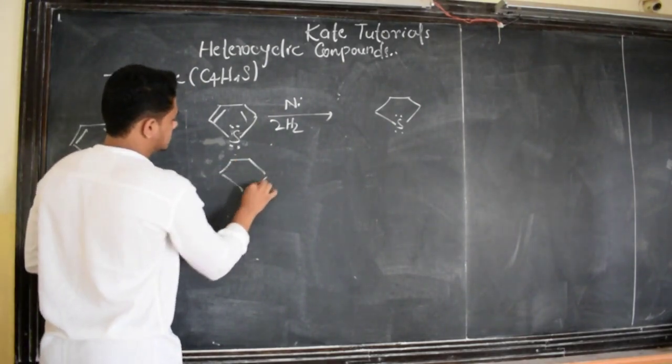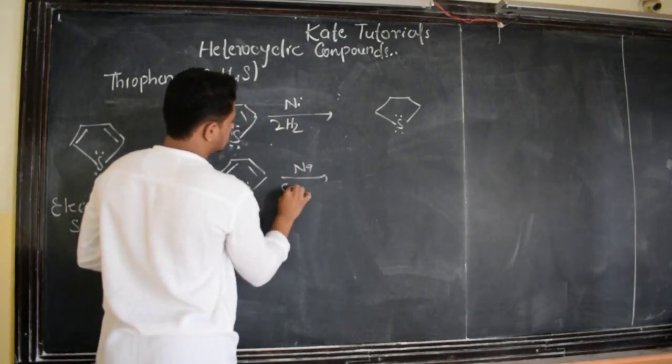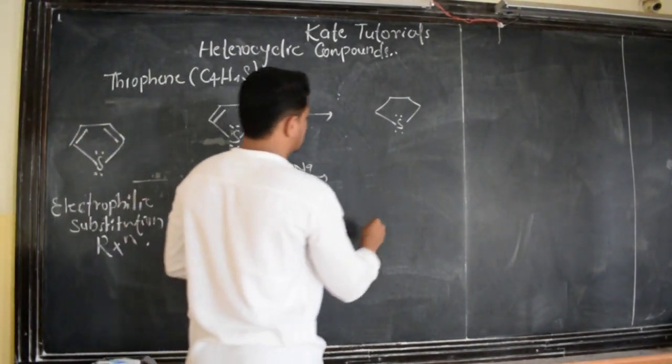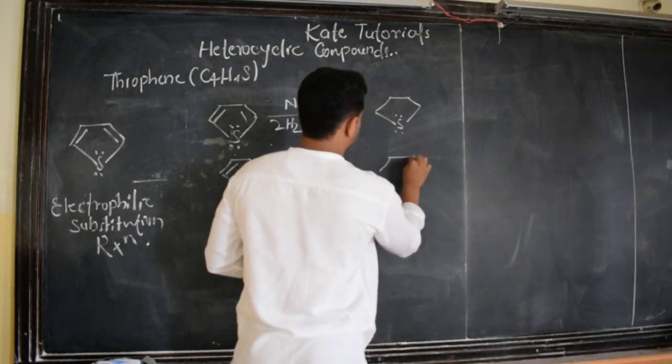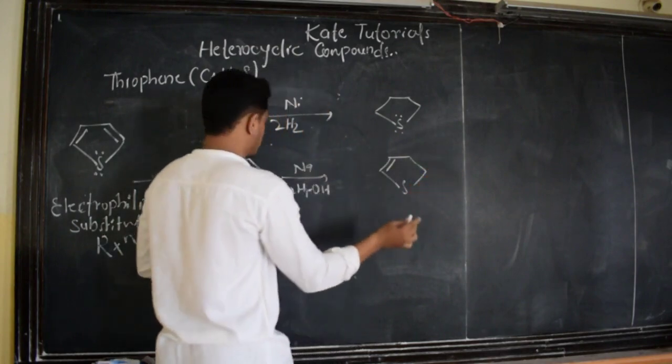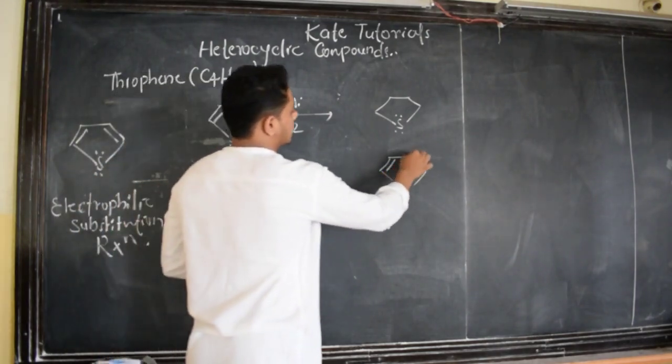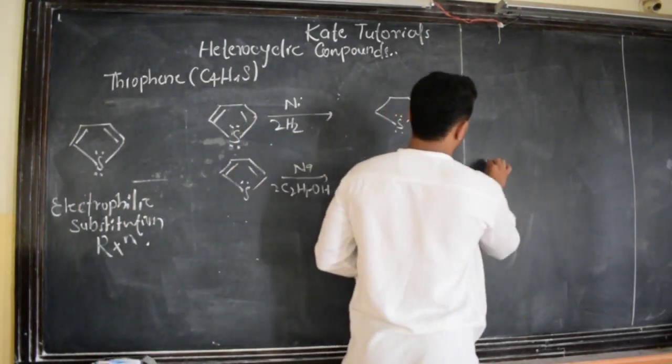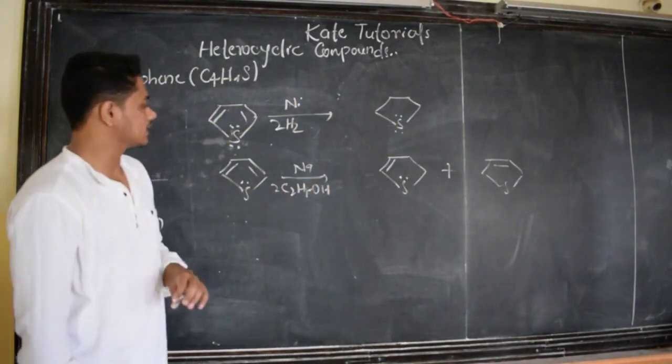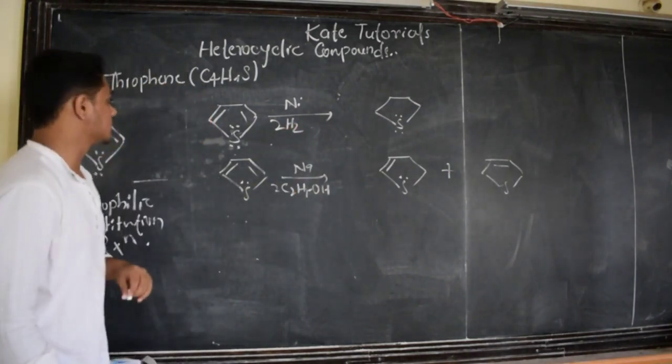The other one is, consider sodium in presence of C2H5OH. Now we are going to get, it is also reduction. We are going to get the compound like this where only two hydrogens will be added, one here, one here. This is also reduction but it is a mild or weak reducing agent, whereas the previous one is a strong reducing agent.